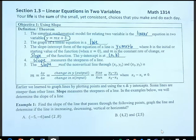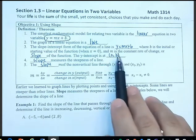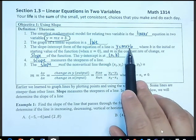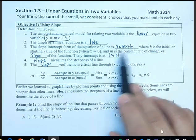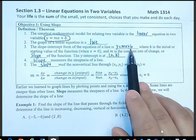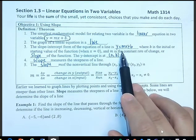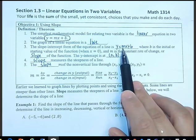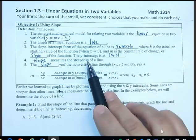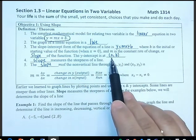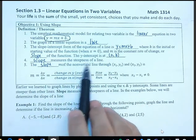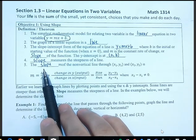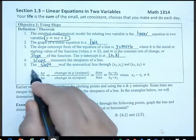The slope-intercept form of the equation is y equals mx plus b, where b is the initial or starting value of the function when x is equal to zero — so b is going to be your y-intercept. And m is the constant rate of change, which we call slope. The y-intercept is at the point (0, b), and slope measures how steep a line is. The slope can be found using the following formula.